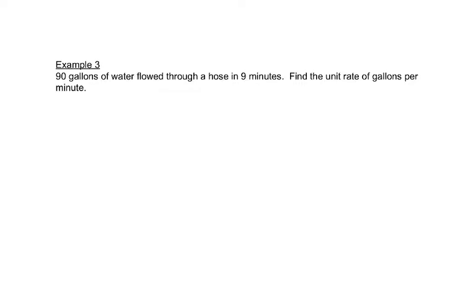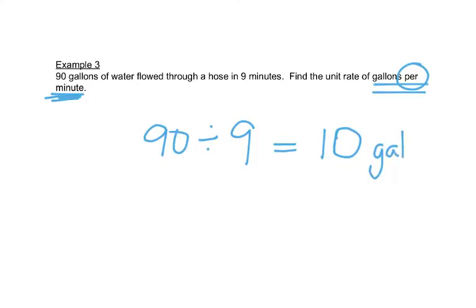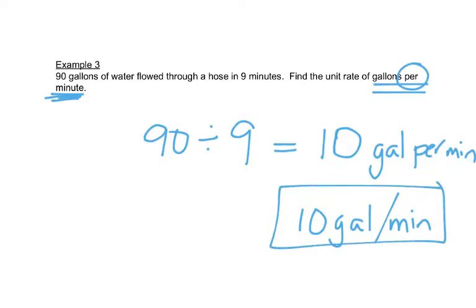So this problem says we have 90 gallons of water flowed through a hose in 9 minutes. Find the unit rates of gallons per minute. So these words are telling you basically what to do. The gallons is listed first. So we have 90 gallons per tells you to divide. And then it says minutes second. So we use the nine minutes second. So 90 divided by nine is 10 gallons per minute. And sometimes that would be written as 10 gallons and then a slash. This is a unit rate. It really means that 10 gallons are flowing every one minute. The second unit is one now.